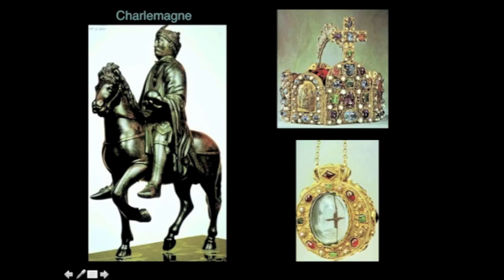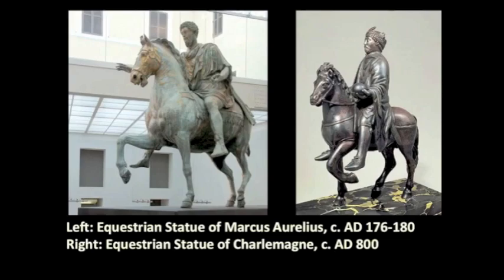These are some of the artifacts of Charlemagne: his crown, the pendant, his equestrian statue. Charlemagne also had a person in his court who wrote his biography, and that biography follows the models of, say, Suetonius' life of Augustus — exactly the same formula, as though this is just one more emperor whose life is being described according to court formula.